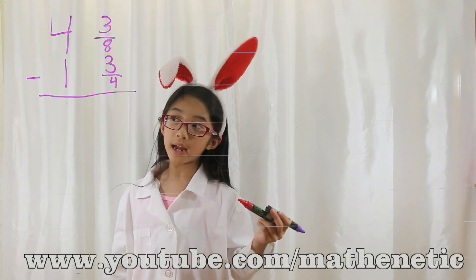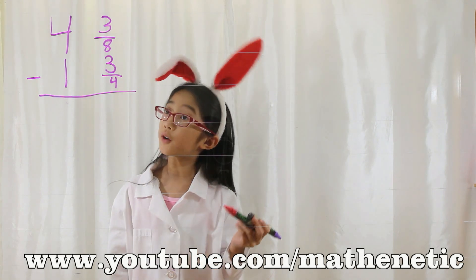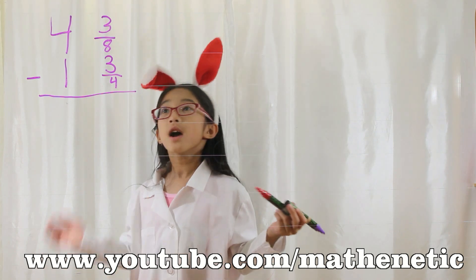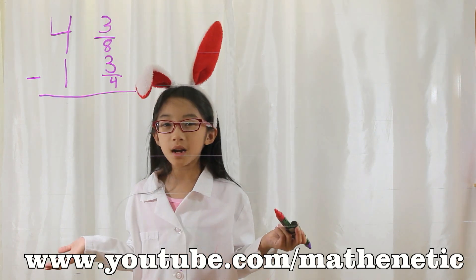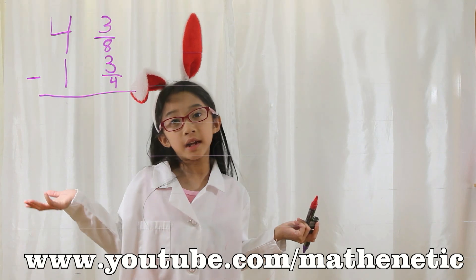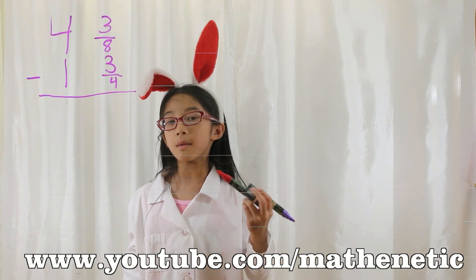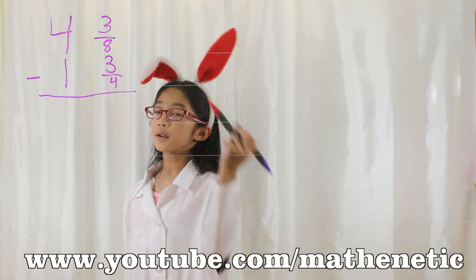So now we have 4 and 3 eighths minus 1 and 3 fourths. Let's look at the fraction section. What do you notice? They don't have a common denominator. What is a denominator? In a fraction, a denominator is the bottom number of a fraction, like 4.